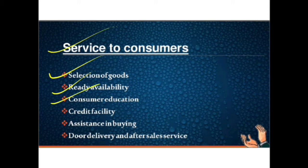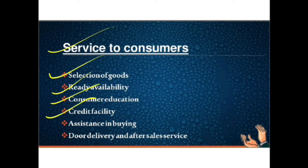The third point is consumer education. Retailers make effective displays of new products and provide significant information about such products — like features, price, etc. — to the customers. It helps customers in their decision-making process for the purchase of goods. In many large retail showrooms, salesmen are appointed who guide customers in selection by explaining the features and use of different products. So the third service is consumer education, or new product information.